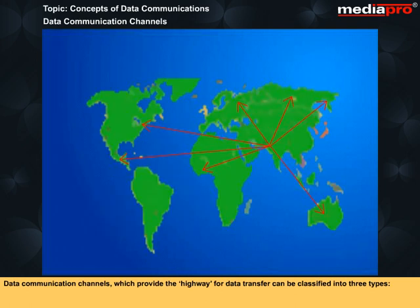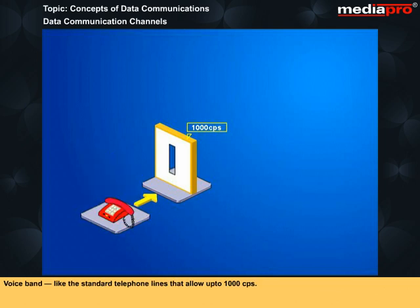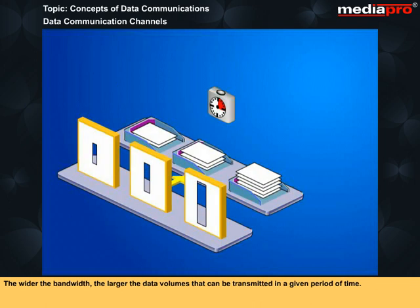Data communication channels, which provide the highway for data transfer, can be classified into three types. Narrowband, like telegraph lines, which support very slow transfer rates of 5 to 30 characters per second. Voice band, like standard telephone lines, that allow up to 1000 CPS. Broadband, as used in satellite communications, microwave links, and coaxial cables, that allow up to 100,000 CPS. The wider the bandwidth, the larger the data volumes that can be transmitted in a given period of time.